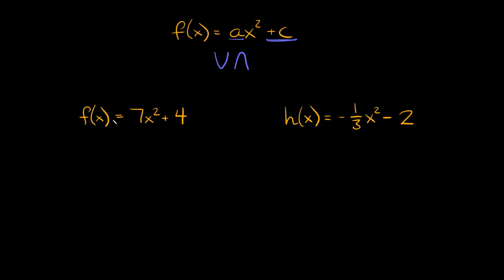Let's do this one first: f of x is equal to 7x squared plus 4. You can see we have a positive 7, so we should expect our parabola to open up. And we have a plus 4, so the parabola should hit the y-axis at positive 4.